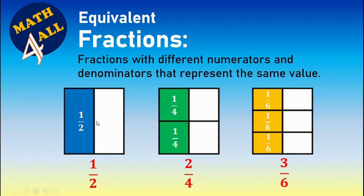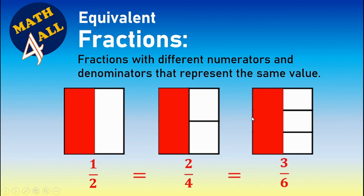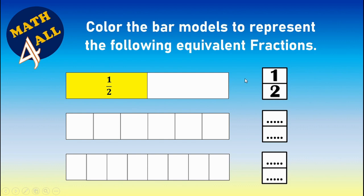Equivalent fractions means fractions with different numerators and denominators that represent the same value. As you see, one half, two over four, and three over six are all the same value but with different numerators and denominators. Let's solve another example to understand the meaning of equivalent fractions — you get different fractions but with the same value.